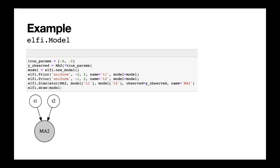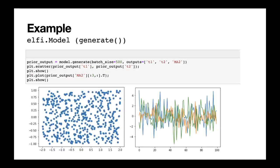We define the simulator node by feeding the model nodes T1 and T2 into it. In our current implementation, we also feed the observed data to the simulator so it's tied to the MA2 simulator. You can give whatever name you want via the name option. When constructing models in ELFI, it's a good idea to draw the model every now and then to get an output of the DAG. When building incrementally, it's also good practice to generate some data and look at outputs from the model to verify that custom priors are working as expected.